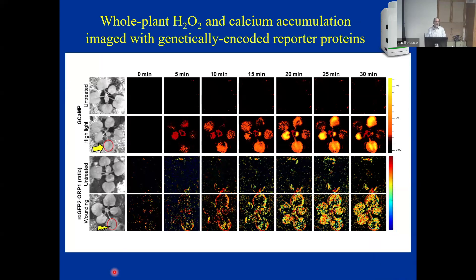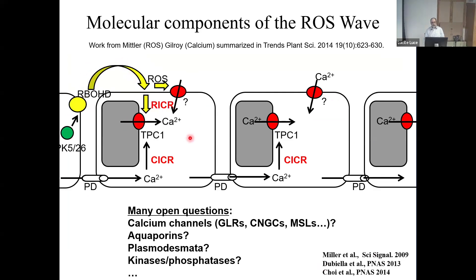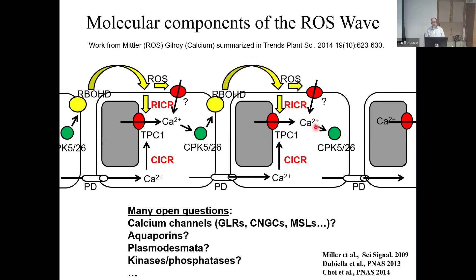We also use GCAMP for calcium imaging and roGFP/ORP1 for hydrogen peroxide. We discovered the ROS wave in 2009, and several years later the labs of Tina Romis and Simon Gilroy discovered the calcium wave. We wrote a review hypothesizing how these work together: RBOH makes ROS, ROS causes calcium influx into the cytosol, activating CPKs that phosphorylate RBOH in the next cell, making ROS there, changing calcium, and so on—propagating cell to cell. That's a nice story, but we had many questions: which calcium channels, what is the role of plasmodesmata, and so forth.